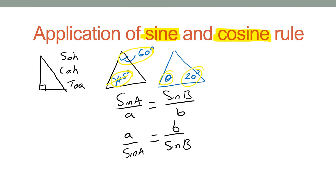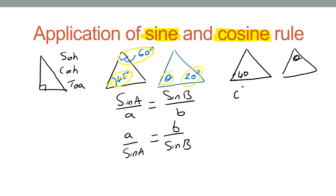If it is a non-right-angle triangle and only one angle is given — say 40 degrees — then you use the cosine rule. The formula is: c² = a² + b² − 2ab cos C.